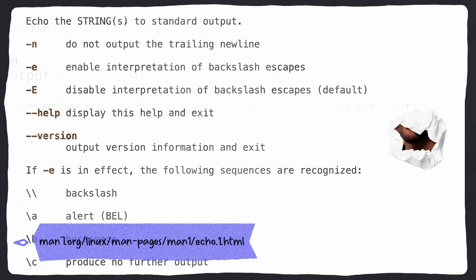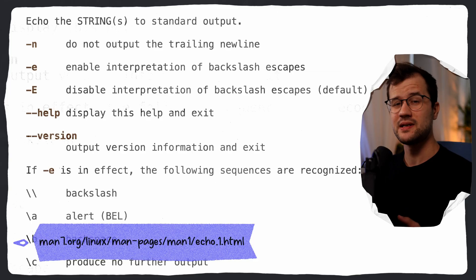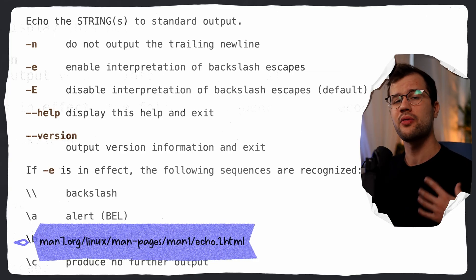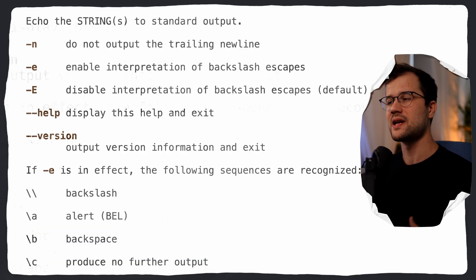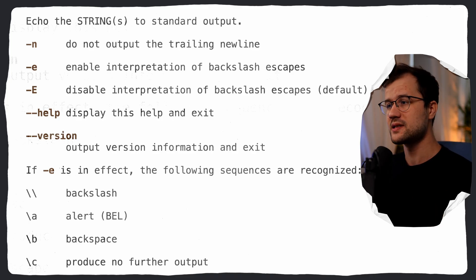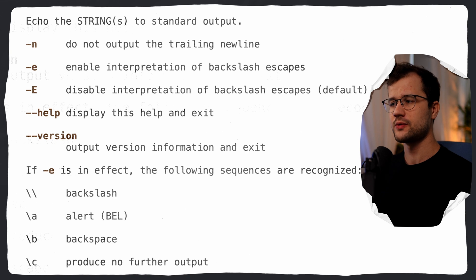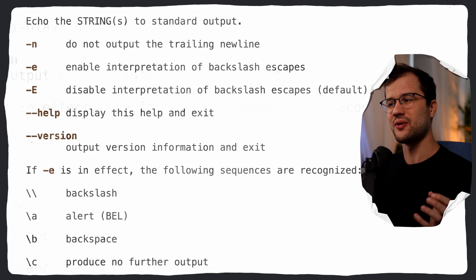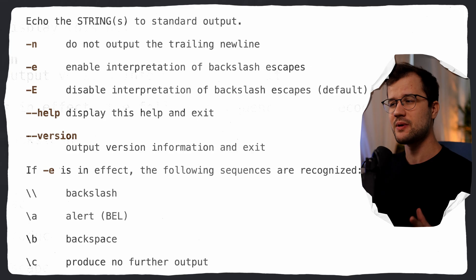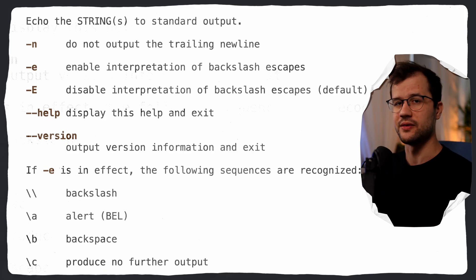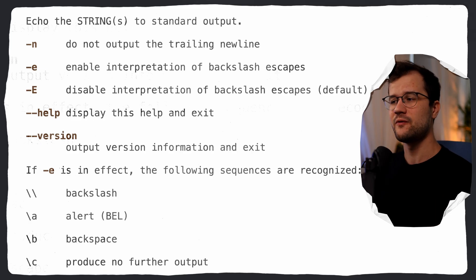Let's just look at this documentation right here. As we can see, we can support three flags. Now, obviously, this can vary significantly based on your operating system, but we will use this as a guideline. The first one, which is quite easy to implement, is the -n flag. We are going to focus on that flag first, and then we are going to implement the -e flag, which seems a bit harder. We will not support all the sequences listed, but feel free to implement the others as well if you want to.